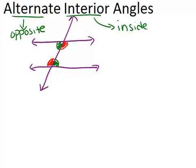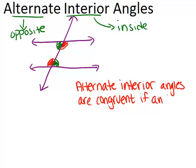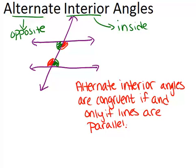Alternate interior angles are especially interesting if the lines are parallel or if the angles are congruent. It turns out that alternate interior angles are congruent if and only if those lines are parallel. This is a biconditional statement, meaning it goes in both directions.